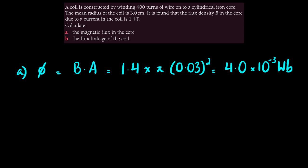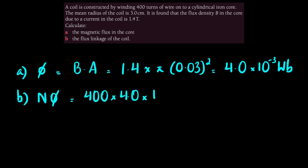Part B asks for the flux linkage of the coil. We need NΦ: N = 400 and Φ = 4.0 × 10⁻³ Wb, so NΦ = 400 × 4.0 × 10⁻³ = 1.6 Wb. Magnetic flux and flux linkage share the same units; flux linkage applies to coils with a number of turns, while magnetic flux applies to any area. In the next video we'll build on these concepts to discuss more advanced laws.